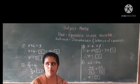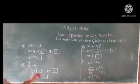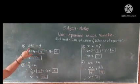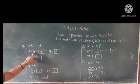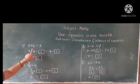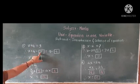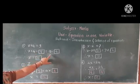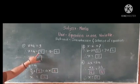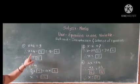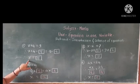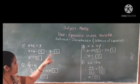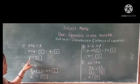Let's review the examples again. First example: x plus 4 is equal to 9. Look at the left hand side — plus 4 is present. The opposite value of plus 4 is minus 4, so we subtract 4 from both sides. x plus 4 minus 4 equals 9 minus 4. Plus 4 and minus 4 cancel, only x remains, and 9 minus 4 equals 5. So the value of x is 5.